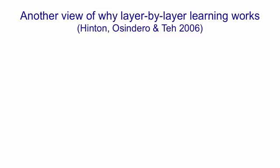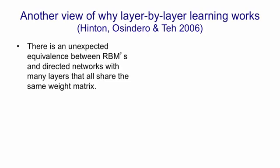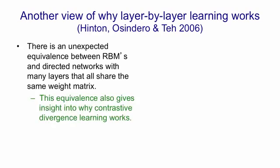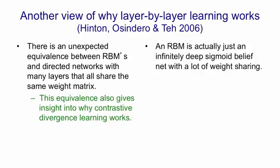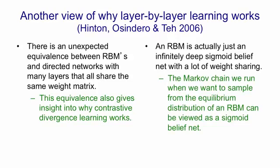I'm now going to describe a very interesting explanation of why layer-by-layer learning works. It depends on the fact that there's an equivalence between restricted Boltzmann machines, which are undirected models with symmetric connections, and infinitely deep directed networks in which every layer uses the same weight matrix. This equivalence also gives insight into why contrastive divergence learning works. So an RBM is really just an infinitely deep sigmoid belief net with a lot of shared weights.